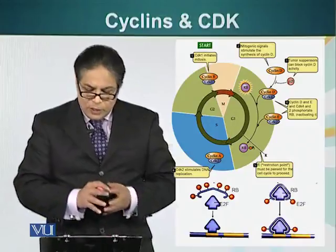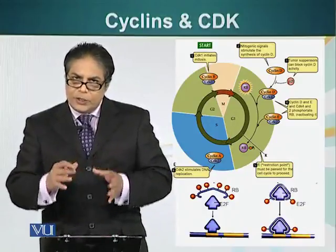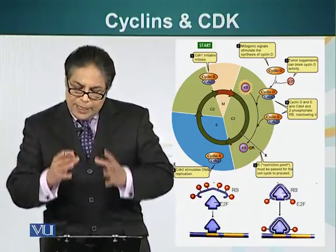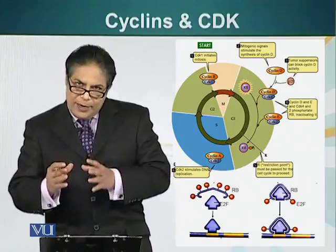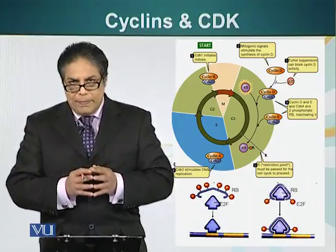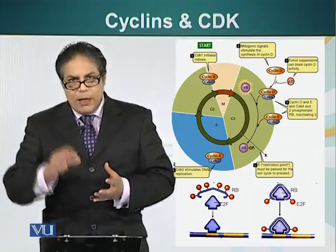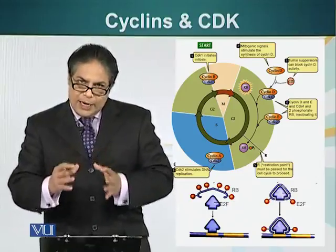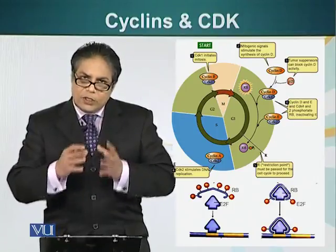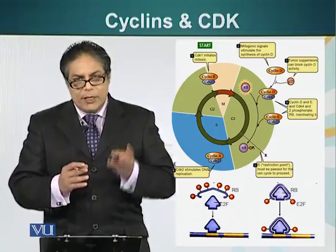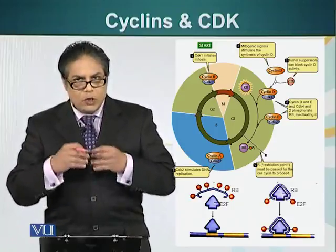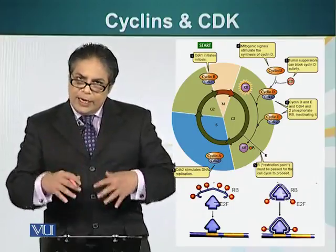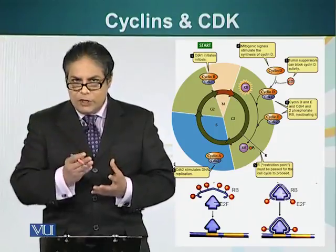Cells don't divide just because nutrition is available — they must divide in response to a signal. When cells are in G1, if they have received a signal to divide, they will make special proteins called cyclin proteins. These are made and then degraded after a particular stage in the cell cycle is over. Cyclin proteins interact with another type of protein called cyclin-dependent kinase. These are enzymes that can attach phosphate groups to different target proteins. However, they require the presence of cyclin, and cyclins are not made until the signal for growth or cell division has been received.